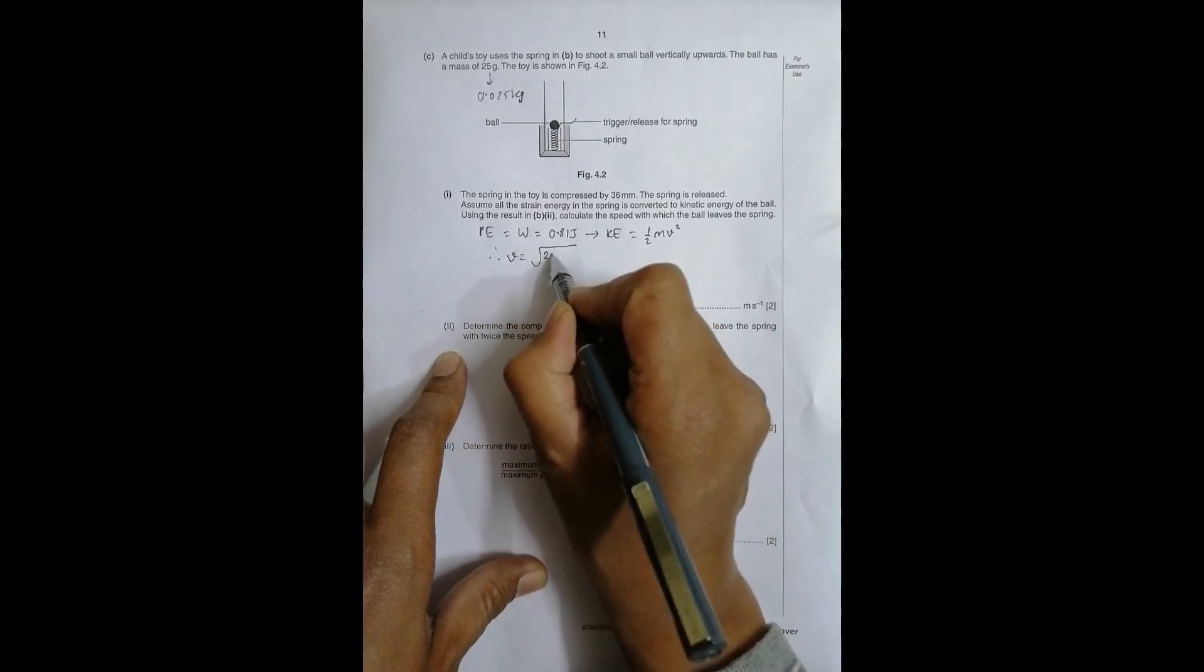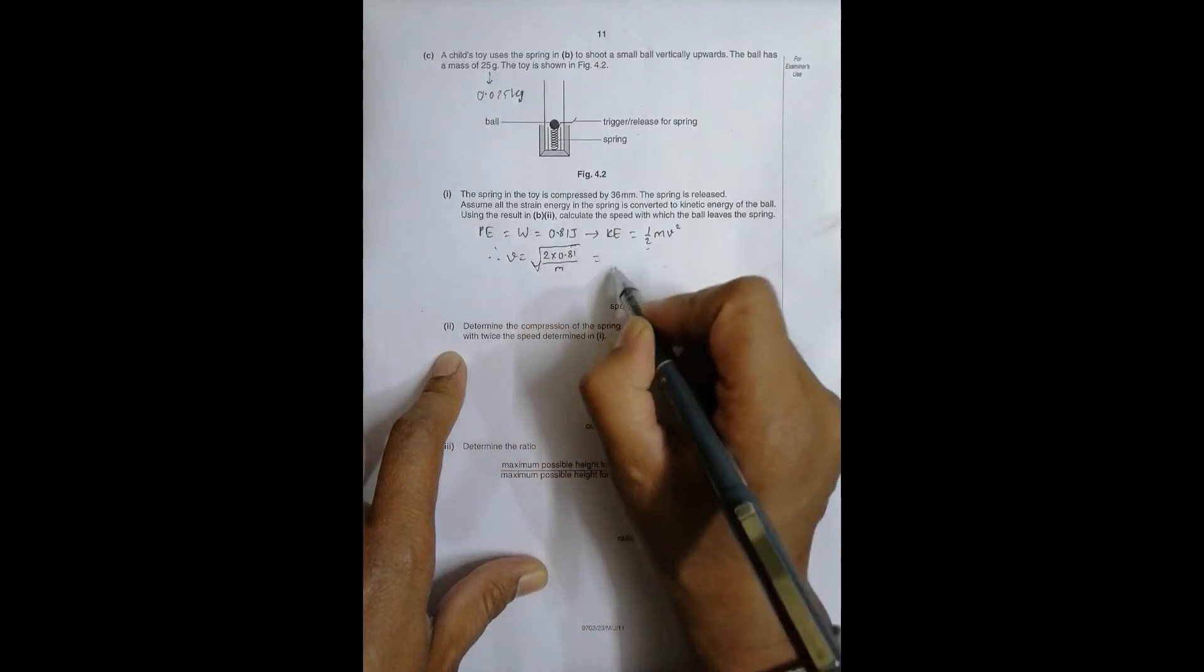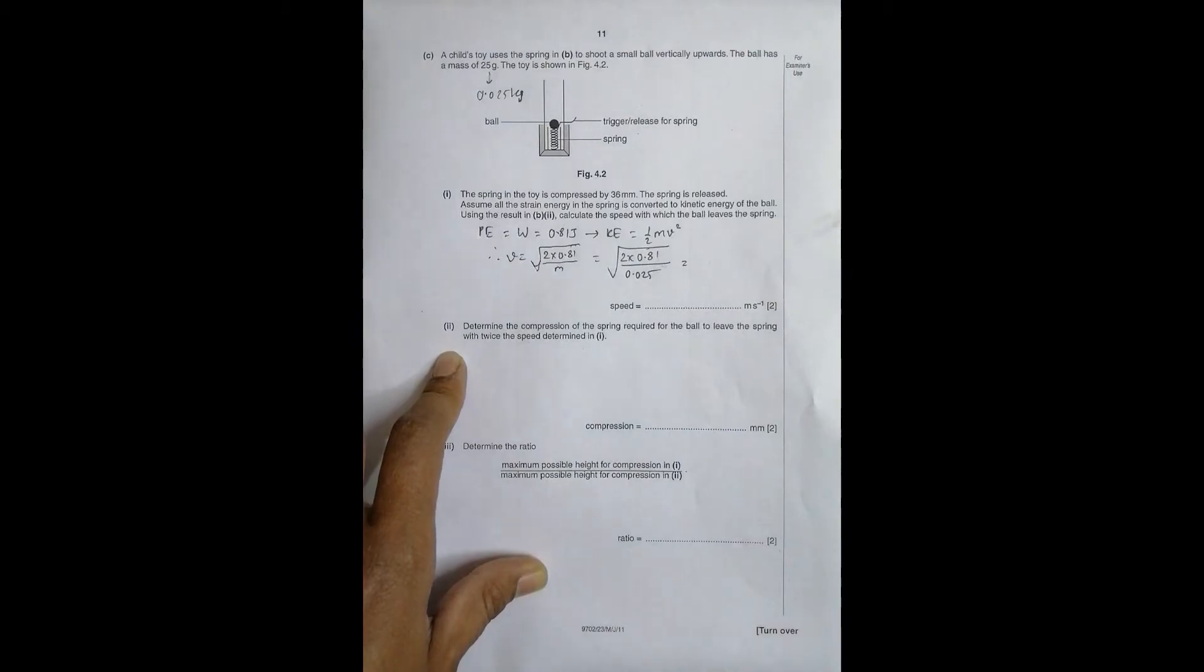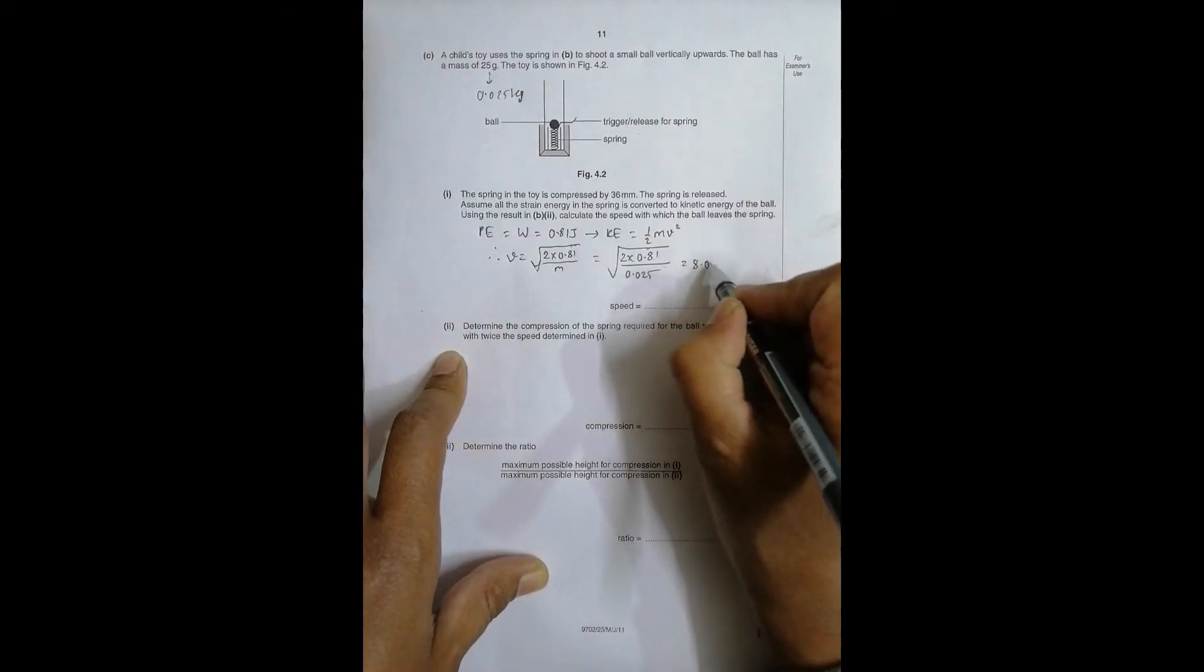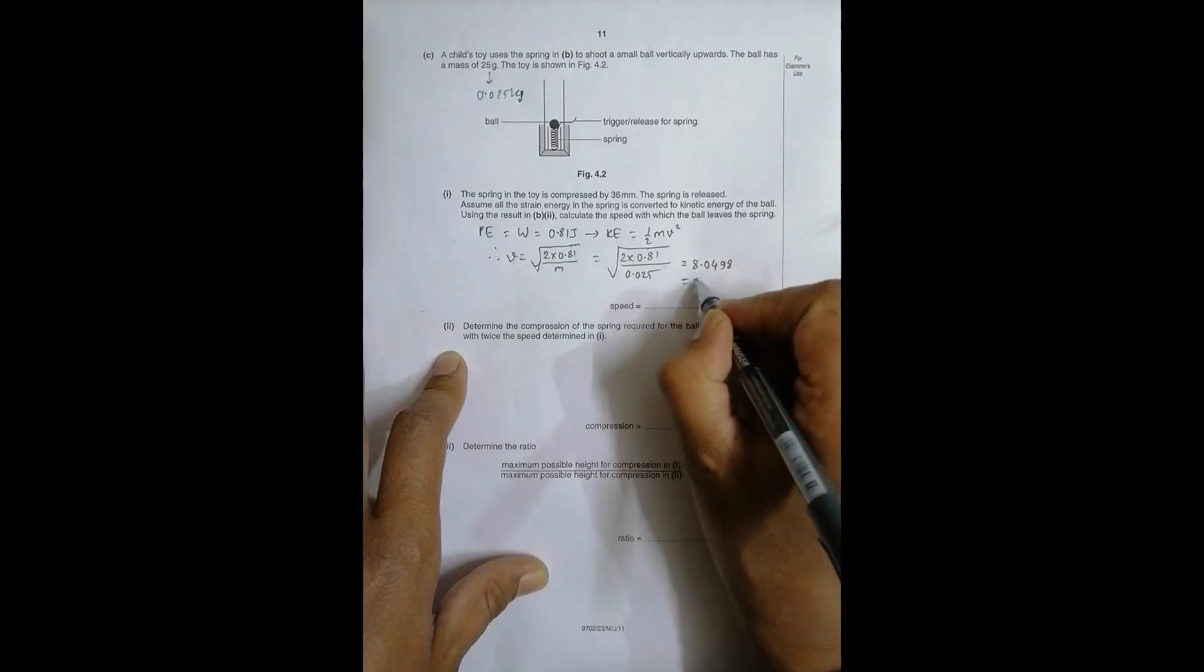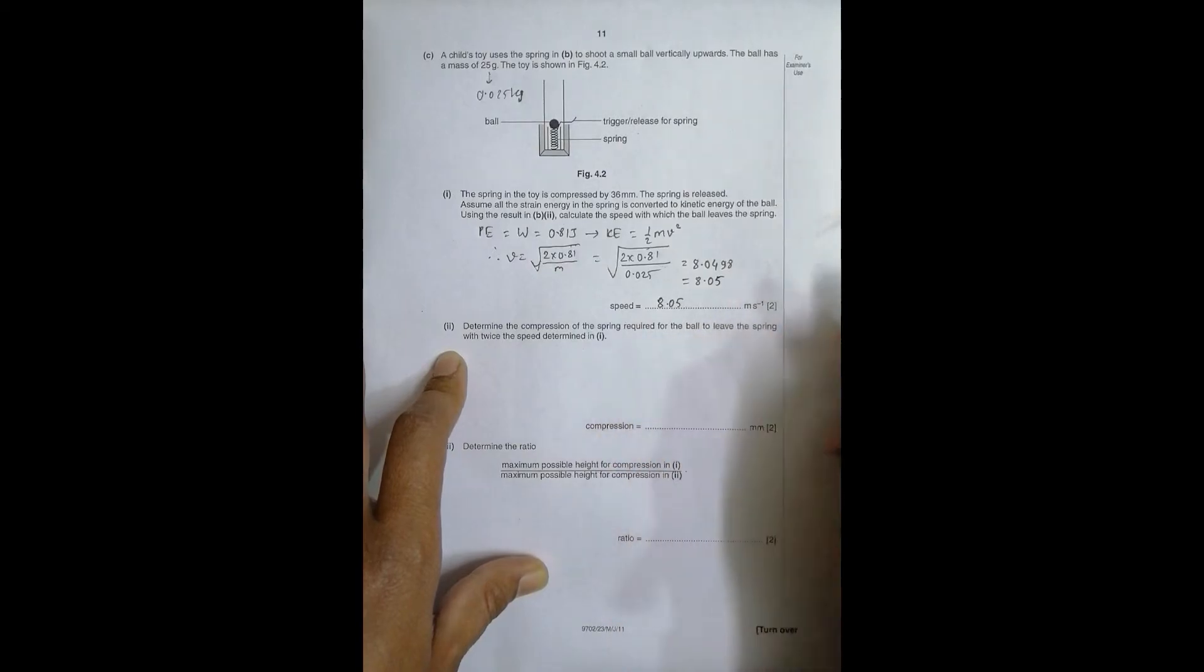So equal to root 2 into 0.81, the mass is equal to 0.025. Let's do the calculations: 0.81 into 2 divided by 0.025, power 1/2, so root means power 1/2. That becomes equal to 8.0498 meter per second. I want to write 3 sig figs here, so it's equal to 8.05 meter per second.